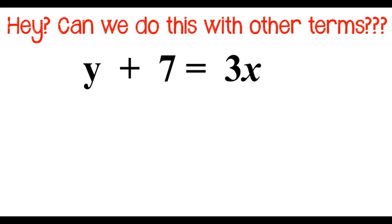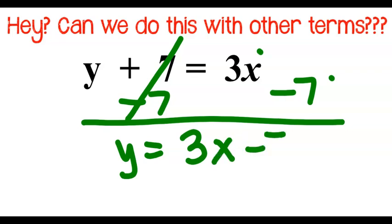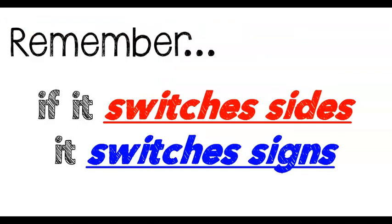Alright, how about this one? It looks like the 3x is in the position I want it to be in, but this constant is in the wrong spot. So I want that 7 to be on the other side of the equal sign. And in order for it to switch sides, I need to use an inverse operation and switch its sign. So again, my y is isolated, and the math on this side cannot be combined. So if I can't do the math, I leave the math side by side. Remember, if something switches sides, it switches signs. That's an inverse operation.